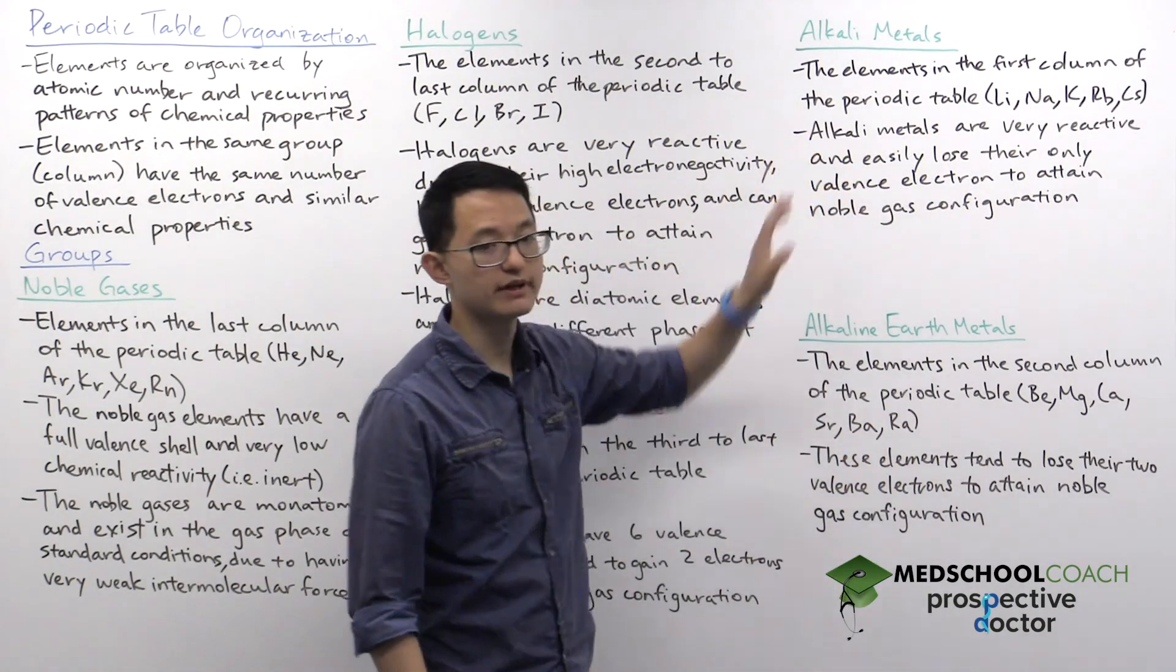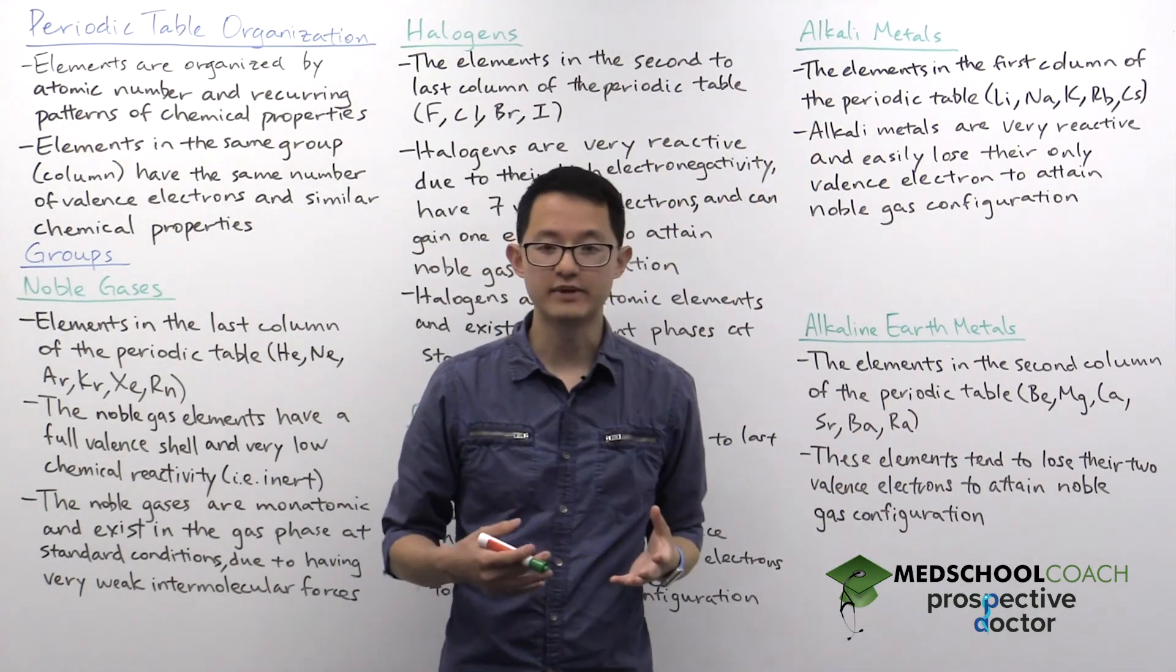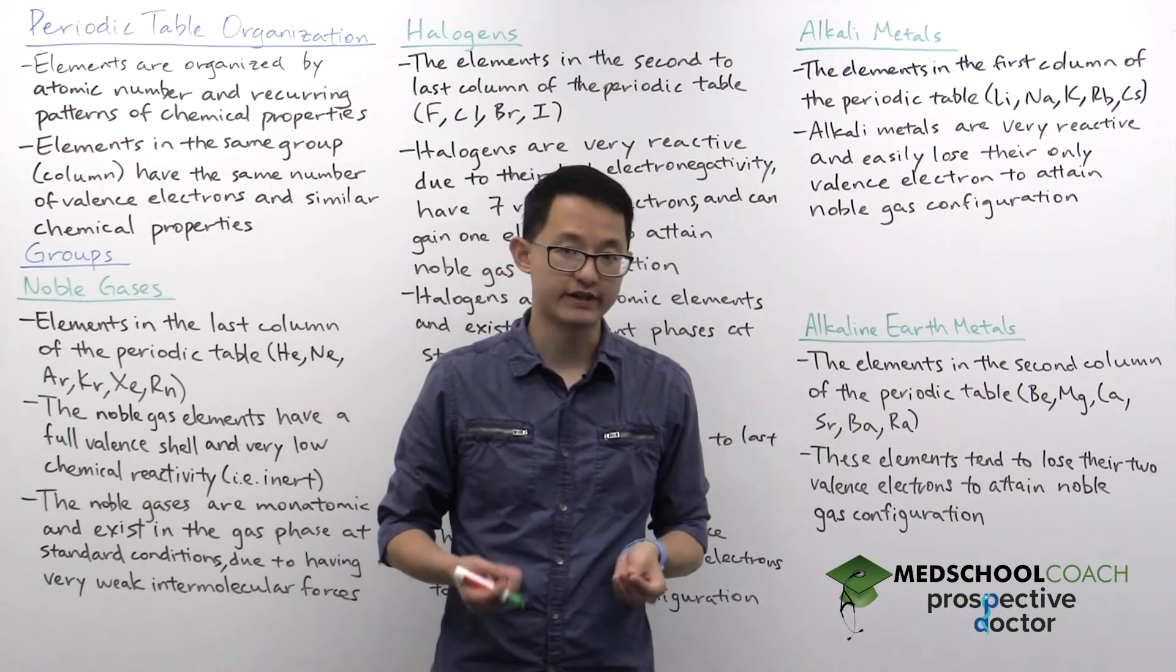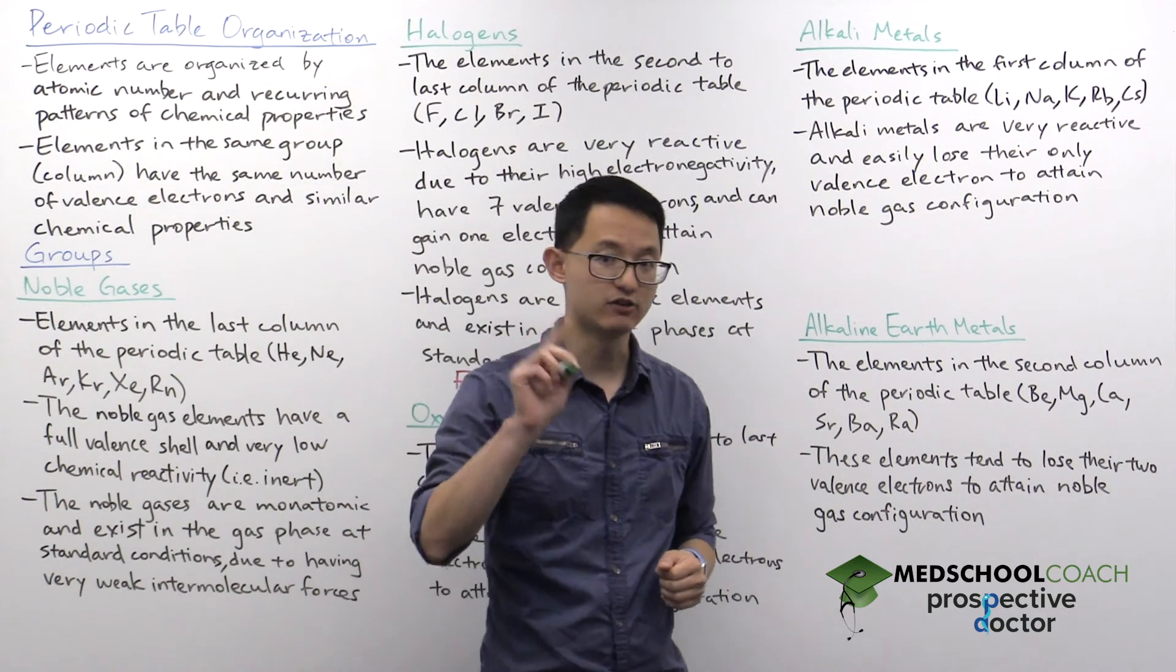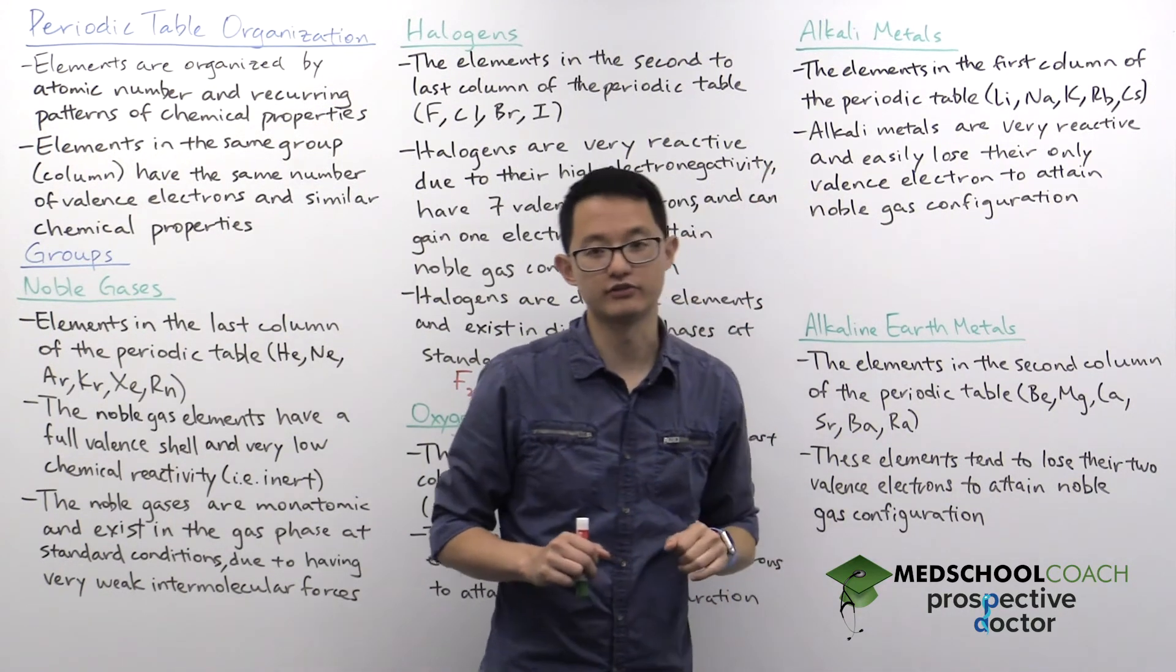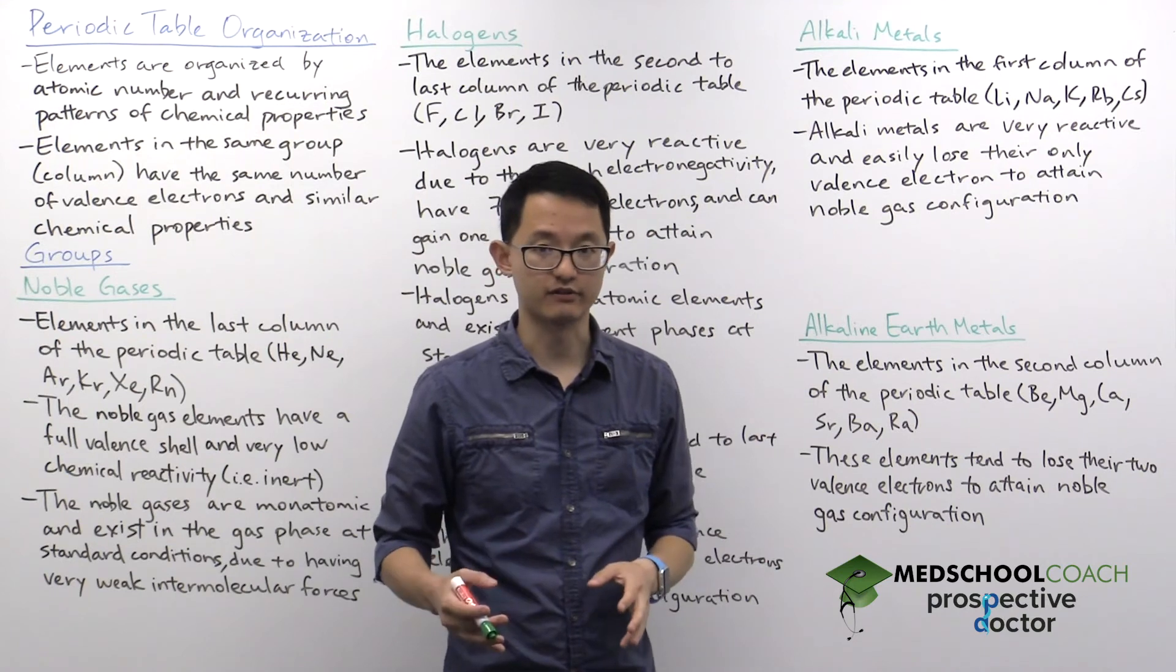And similarly to the halogens, these elements are very, very reactive. And again, that's because they're very close to a noble gas configuration. They have a single valence electron, and they easily lose it in order to attain noble gas configuration.